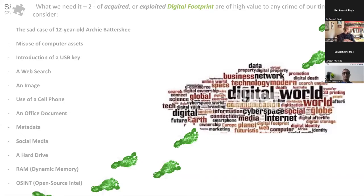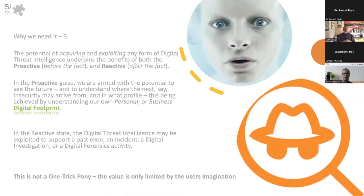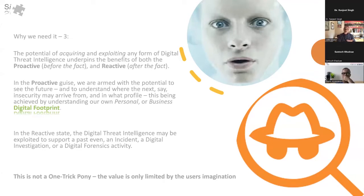None of my active data is ever kept on my local drive. The potential of acquiring and exploiting any form of digital threat intelligence underpins the benefits of both proactive — before the fact — and reactive — after the fact. In the proactive guise we are armed with the potential to see the future, a little bit like Minority Report, where we can understand where the next insecurity may arrive from. We understand our own digital footprint and see the footprint that is open source to other actors. If we can identify the weaknesses before they do, we can see into the future as to what could arrive. Therefore, it stands to common sense that utilizing this kind of threat intelligence to understand our own footprint is really important.